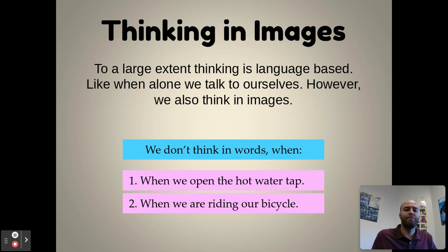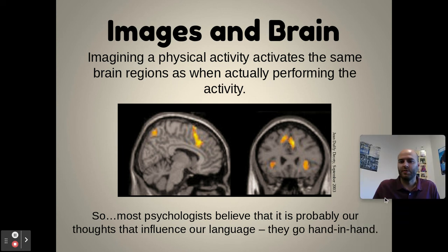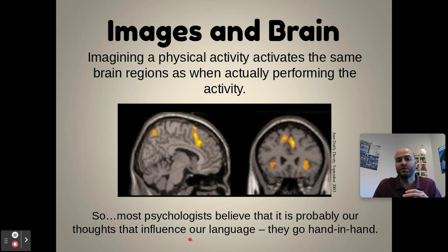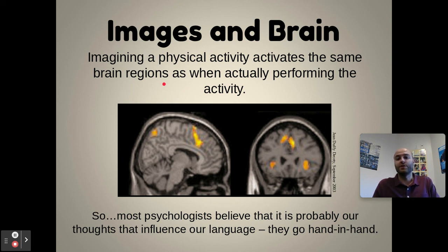When imagining a physical activity, it activates the same brain region as when actually performing that activity — so we're not just thinking in language there. Most psychologists believe it is probably our thoughts that influence our language, and they go hand in hand. Whorf says language influences thought; many others say thought influences language. But realistically, they both impact each other. Cultures may have terms for things we've never thought of in English, which can change how they think, and imagining physical activities can also change the way we think and speak.